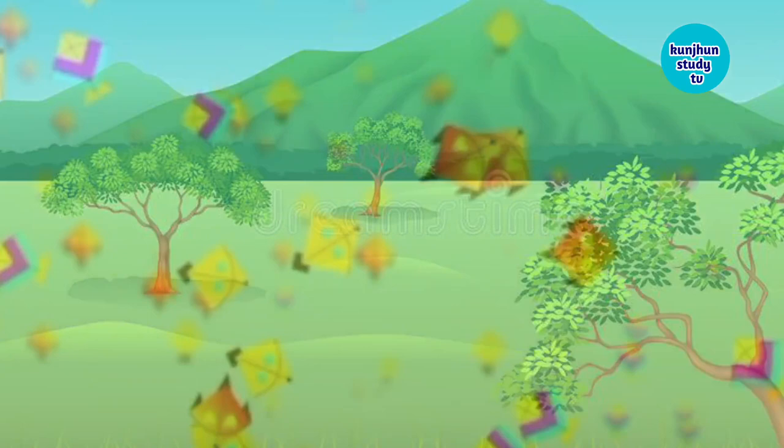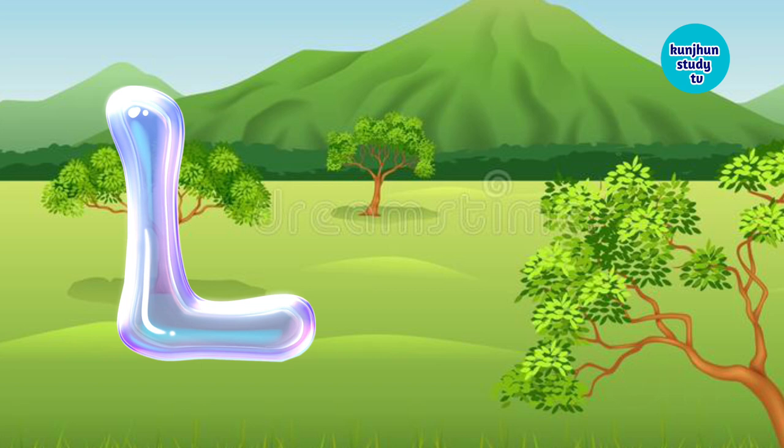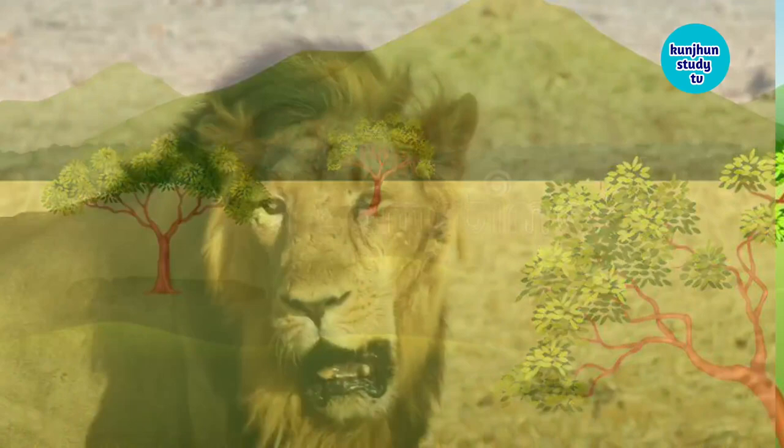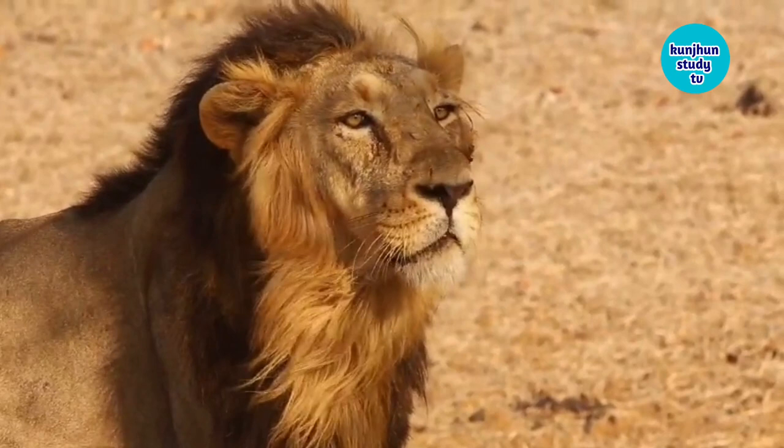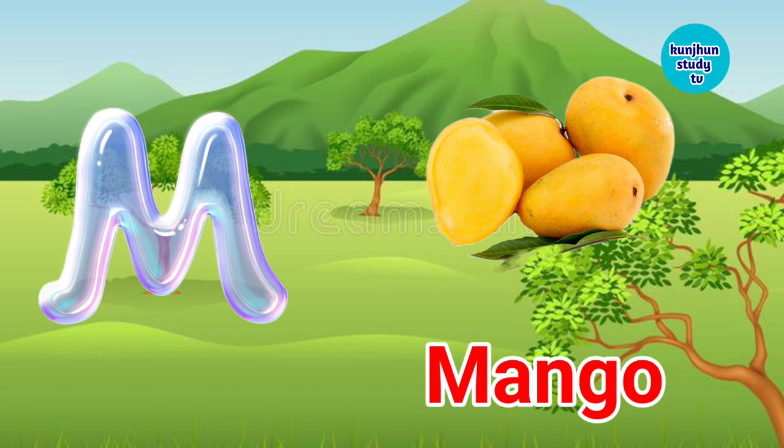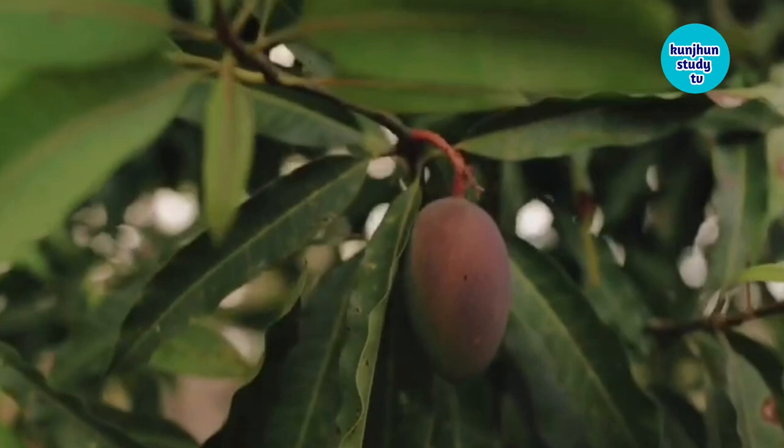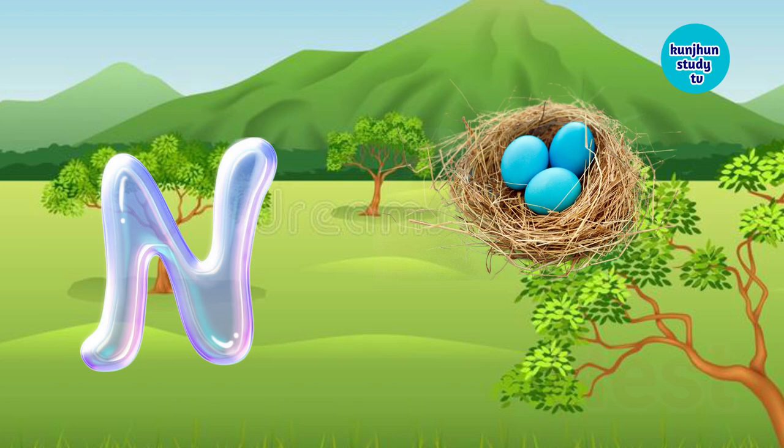L for lion. Lion means sher. M for mango. Mango means aam. N for nest. Nest means ghosla.